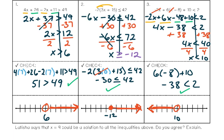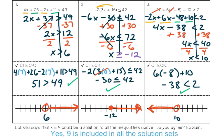Letitia says that x equals 9 could be a solution to all the inequalities above. I agree with Letitia: 9 is greater than 6, 9 is greater than negative 12, and 9 is less than 10 — so 9 satisfies all three solution sets.